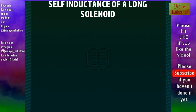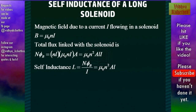Self-inductance of a long solenoid: Consider a long solenoid and the magnetic field produced by the solenoid due to a current i flowing through it is B, where B = mu0 * n * i and n is the number of turns per unit length. The total flux linked with the solenoid is N*phi_B = n*l * mu0*n*i * A = mu0 * n² * A * l * i.